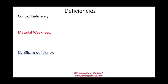We need to be familiar with three terms: control deficiency, material weakness, and significant deficiency. Understanding these terms is important before going over the report, because although they are defined in the reports themselves, we need to talk about them here and understand how we determine what is considered a material weakness versus a significant deficiency.